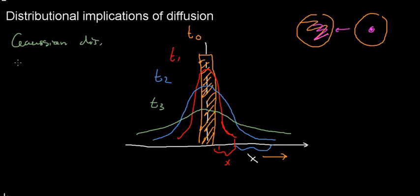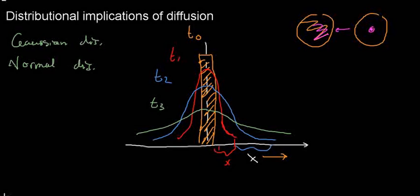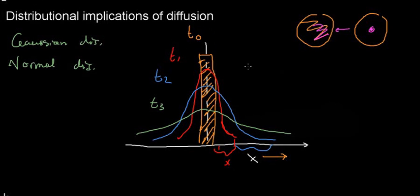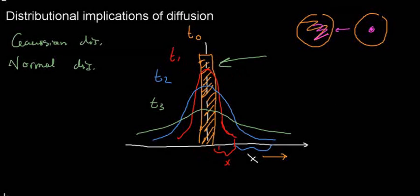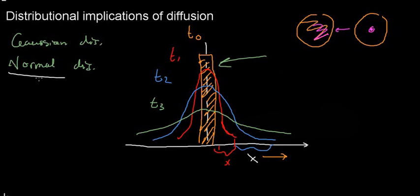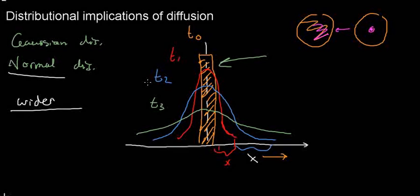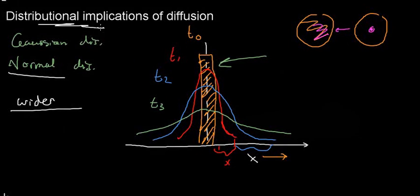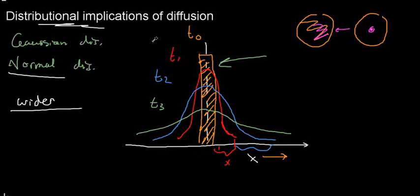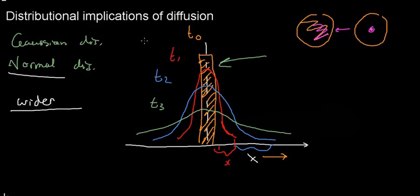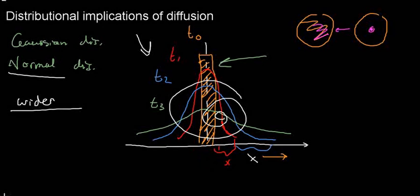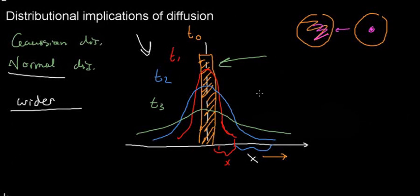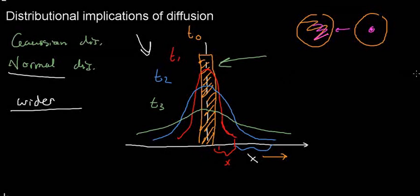This is a Gaussian distribution, also called a normal distribution. The exam question was something along the lines of fill-in-the-blanks: 'As a material diffuses, it resembles a blank normal distribution that gets blank wider.' That's pretty much it — just a fill-in-the-blanks. If you don't really understand statistics yet, it's not very important. Just know it's a normal distribution that gets wider, and we can move on.